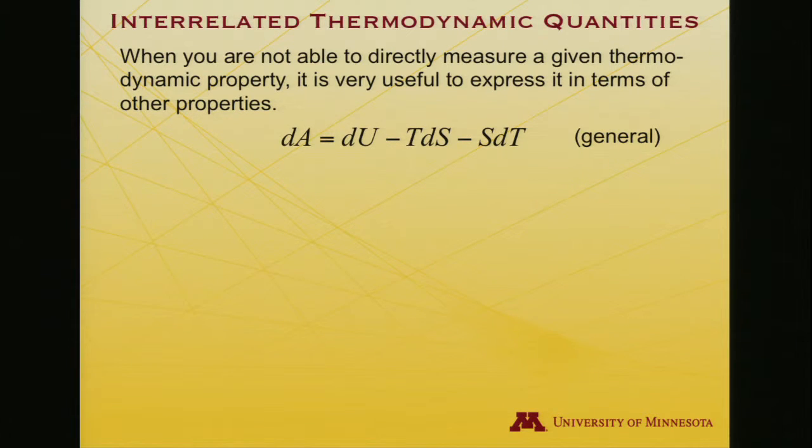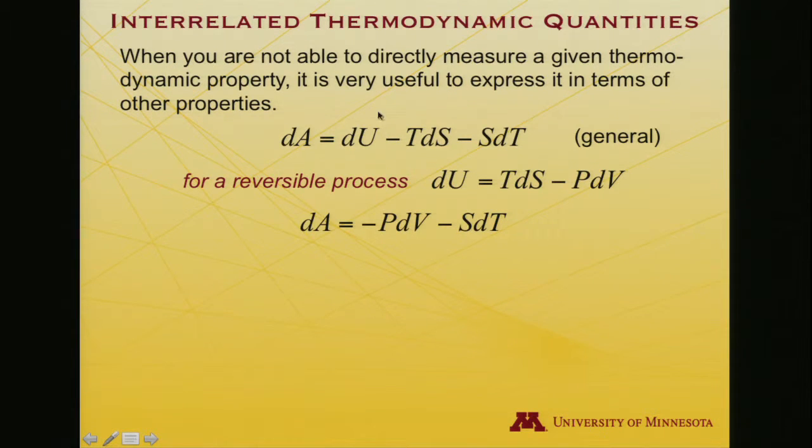Here is a general expression, for instance, that dA equals dU minus TdS minus SdT. And for a reversible process, we would say dU equals TdS minus PdV. So remember, that is the first and second law. I've replaced del Q with TdS. That's the second law. And because it's reversible, I can replace the work with PdV. And so when I substitute, I get TdS minus PdV minus TdS minus SdT. And so all that's left is that dA is equal to minus PdV minus SdT.